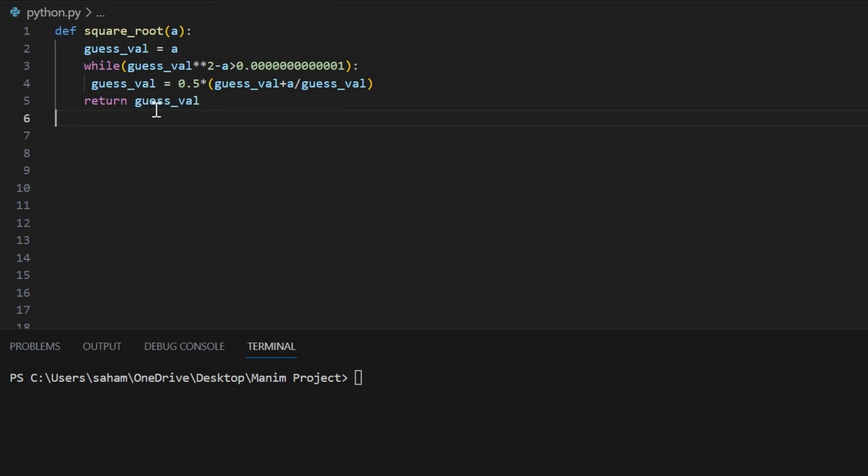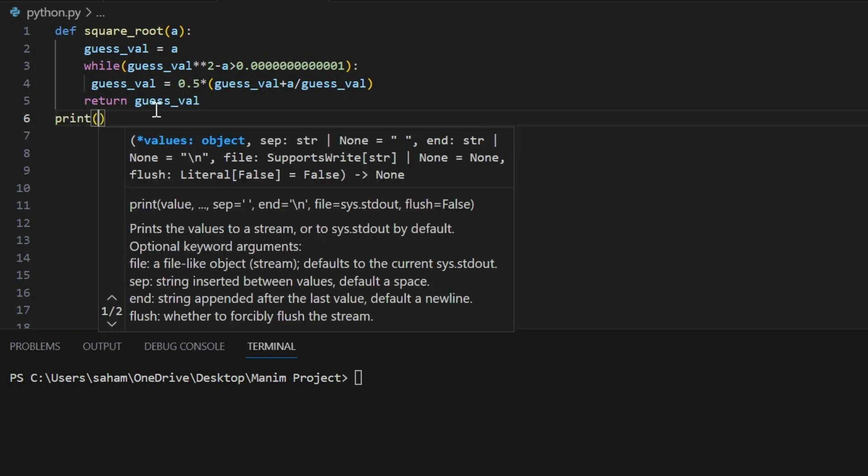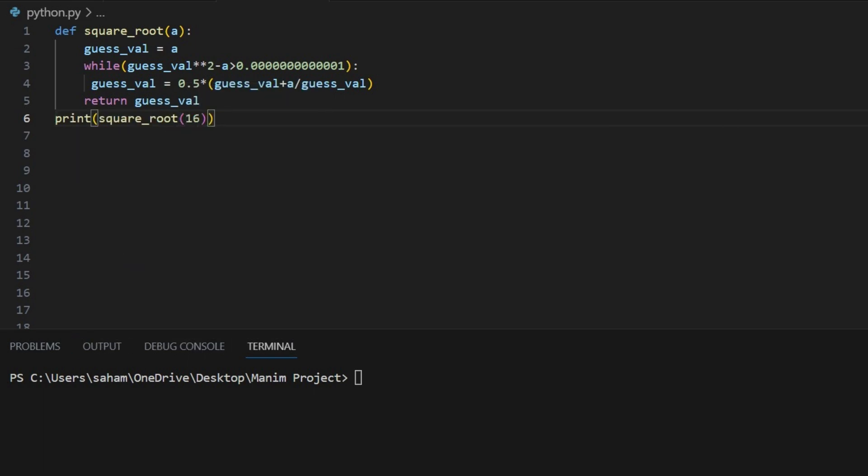Now, let's put our square root function to the test of finding the square root. We will do this by printing the square root of 16 and running the program. And here you have it. The output is indeed 4.